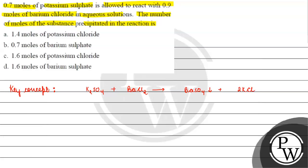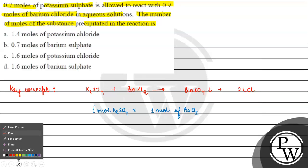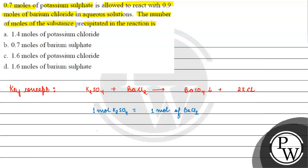If we look carefully, one mole of potassium sulfate is reacting with one mole of barium chloride. So if we look at the question, we have 0.7 moles of potassium sulfate. Therefore, 0.7 moles of potassium sulfate will react with 0.7 moles of barium chloride.